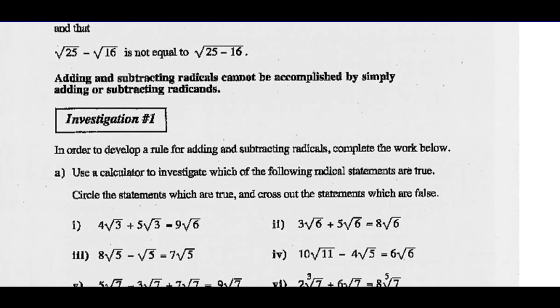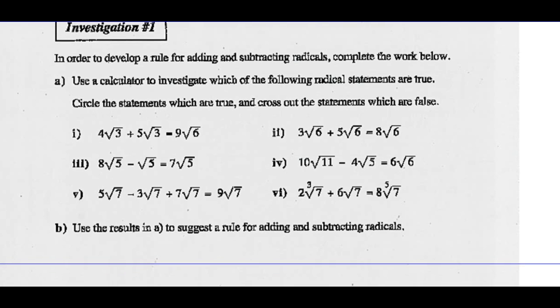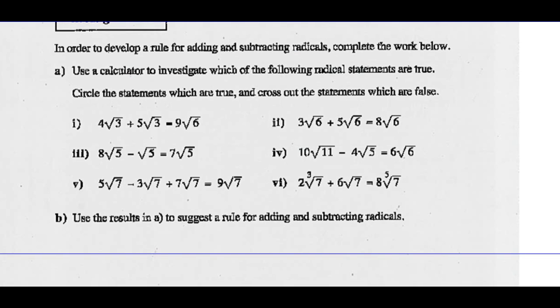So let's do a quick investigation to develop a rule for adding and subtracting radicals. Part A: use a calculator to investigate which of the following radical statements are true — circle statements which are true, and cross out the statements which are false. Pause this video and go ahead and do that. Then do part B: use the results of A to suggest a rule for adding and subtracting radicals. Once you've completed that, you can restart the video and continue on.